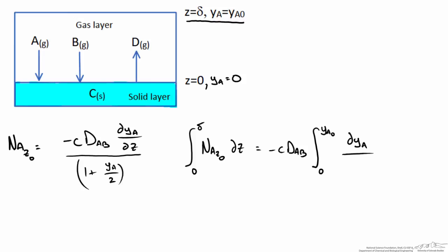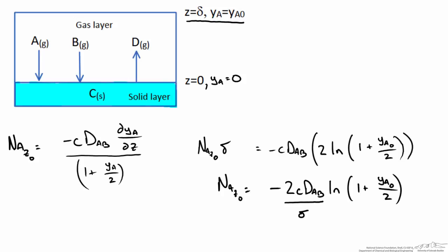Evaluating the left side we get NAz naught times delta and evaluating the right side we get 2 times the natural log of (1 + yA/2). To solve for NAz naught we just divide by delta and we get the following equation for NAz naught.